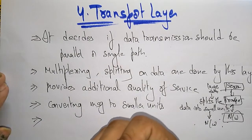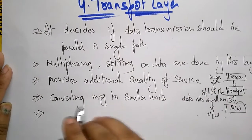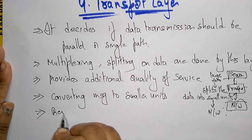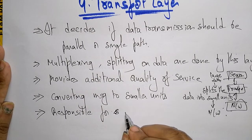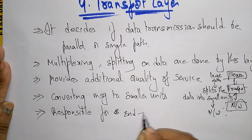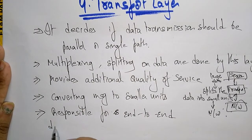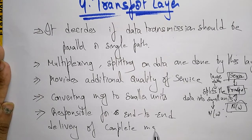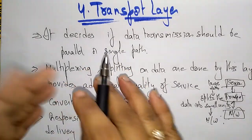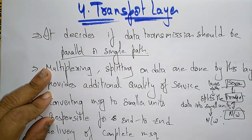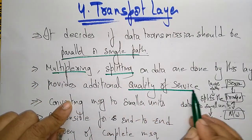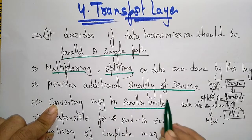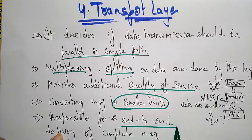The transport layer is also responsible for end-to-end delivery of the complete message. So it does many functions: it decides whether to send data in parallel or single path, it handles multiplexing and splitting, it provides quality of service, and it converts messages into smaller units.